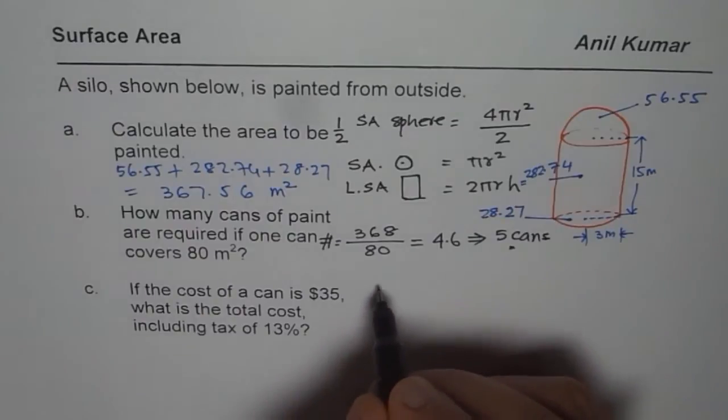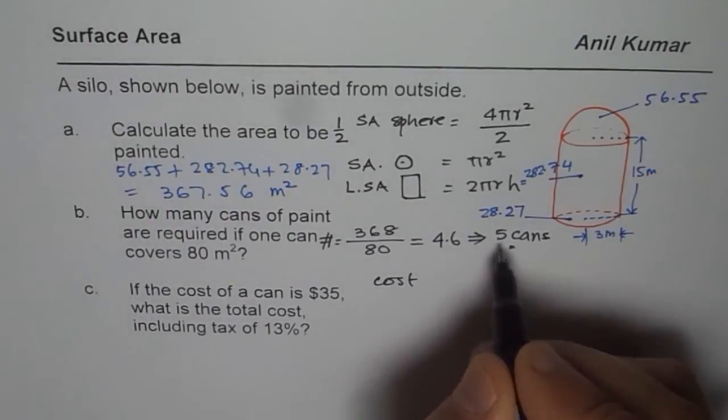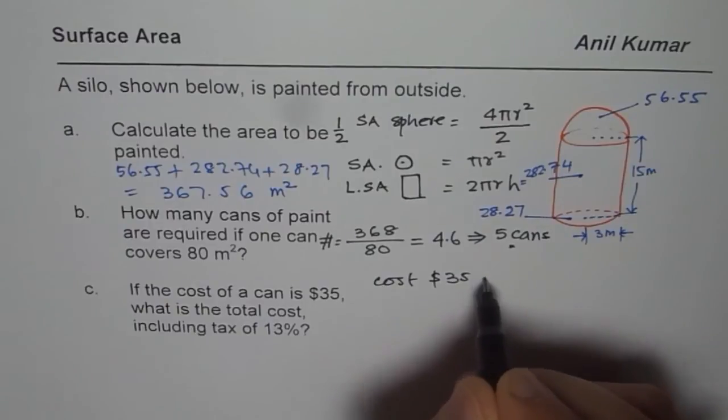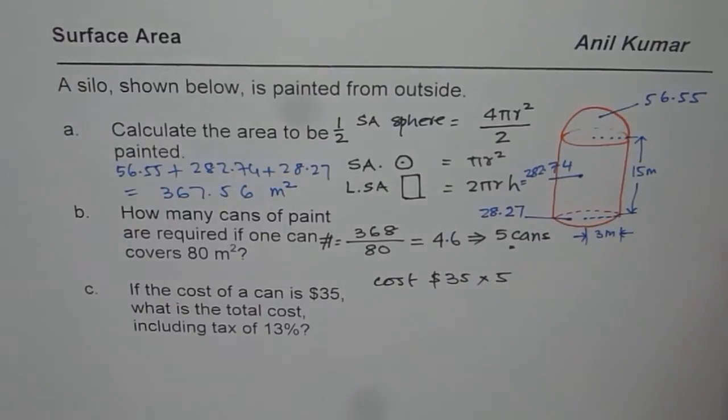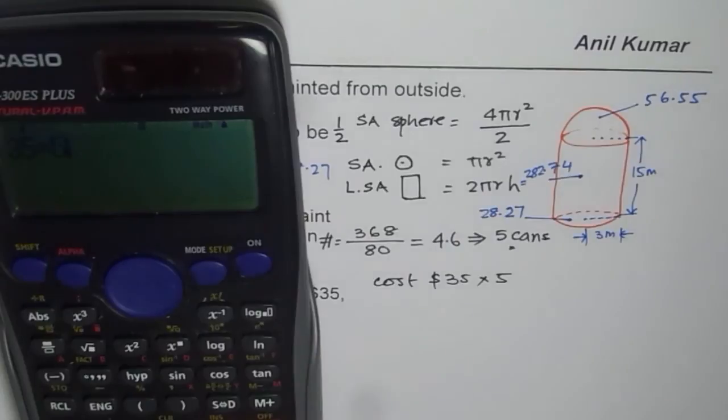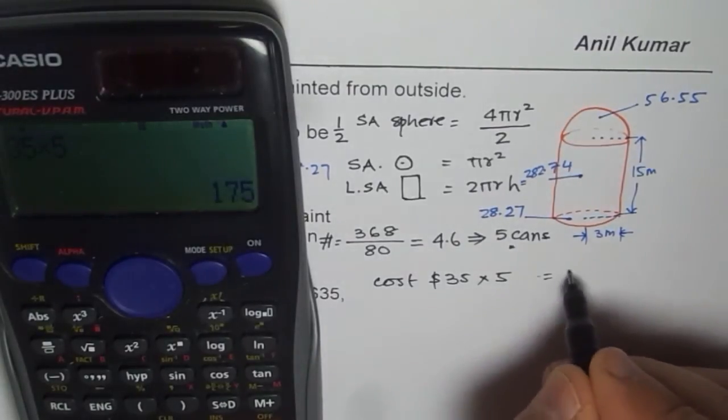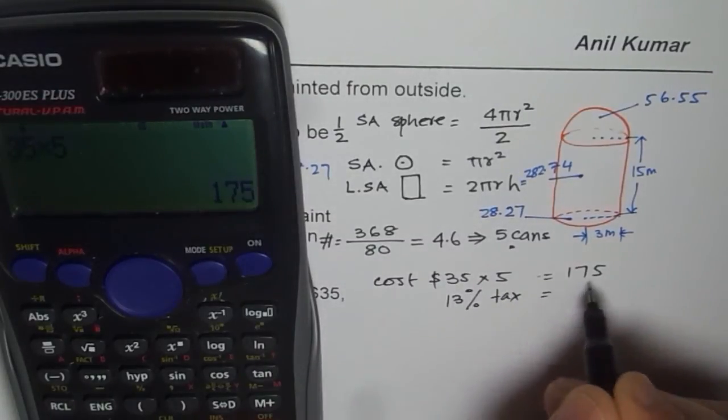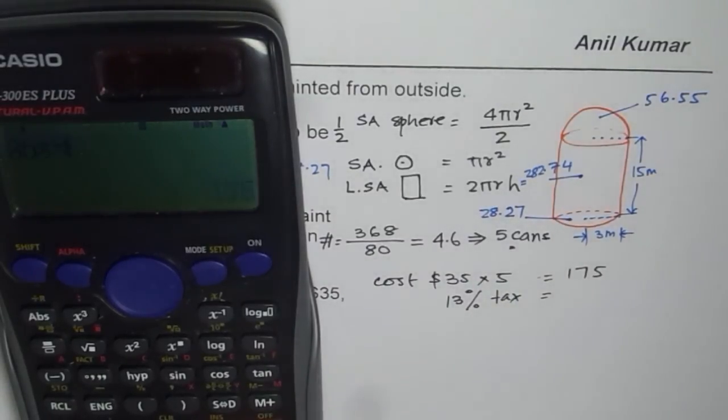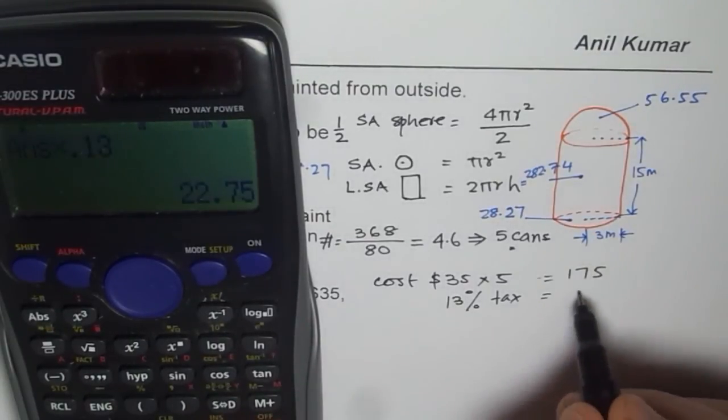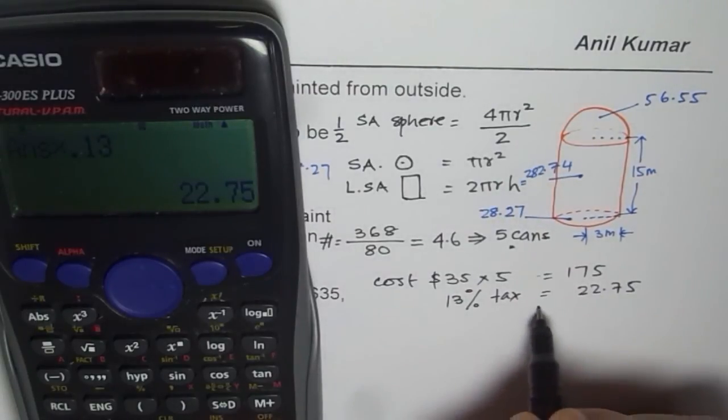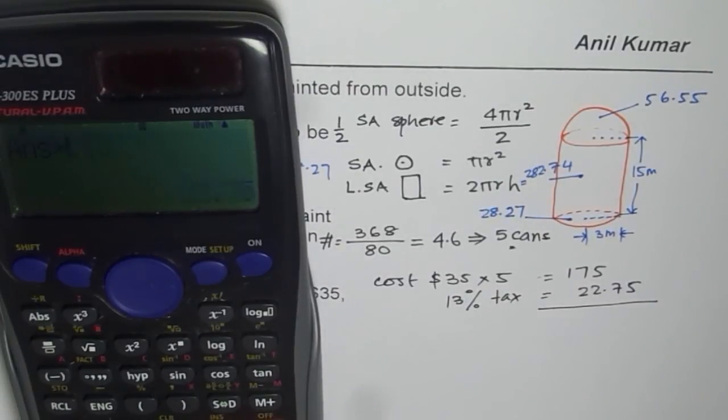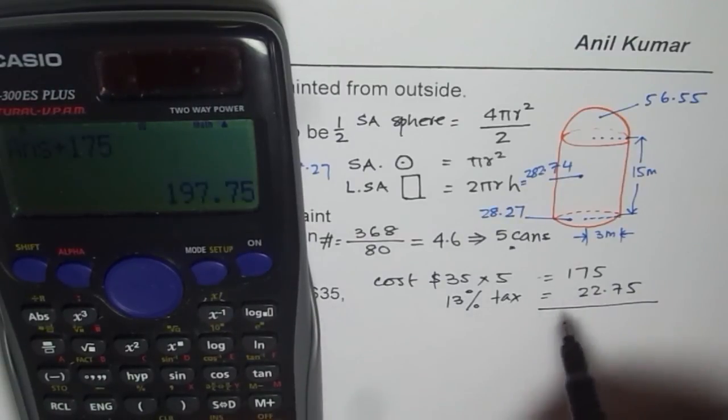What is the cost if cost of each can is $35? The cost of 5 cans will be $35 times 5, that's $175. Now you have to add 13 percent tax to this, that means times 0.13, approximately $22.75. When you add this to $175 you get the total amount which is $197.75.